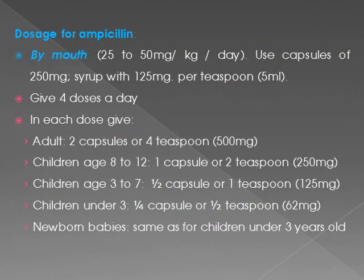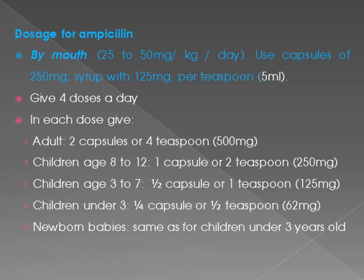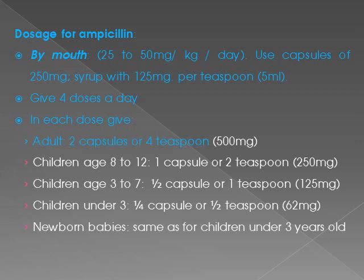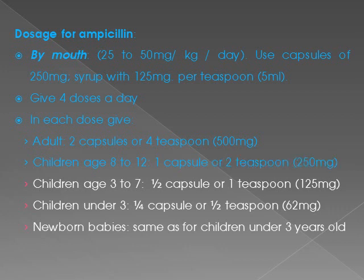Dosage for ampicillin by mouth: 25 to 50 mg/kg/day. Use capsules of 250 mg or syrup with 125 mg per teaspoon (5 ml). Give 4 doses a day. In each dose give: Adults — 2 capsules or 4 teaspoons (500 mg). Children age 8 to 12 — 1 capsule or 2 teaspoons (250 mg).